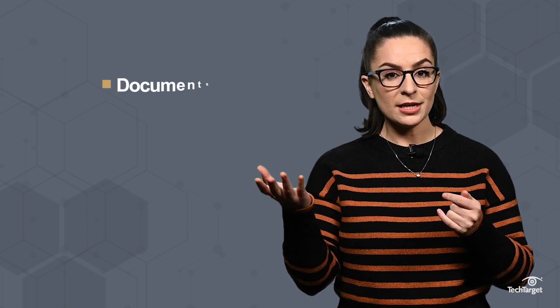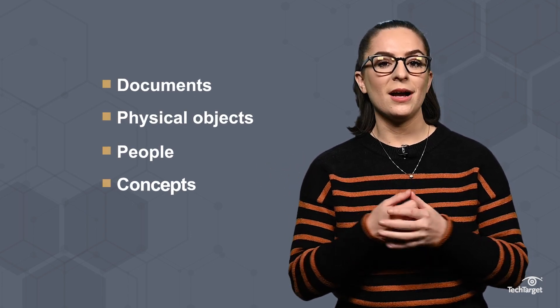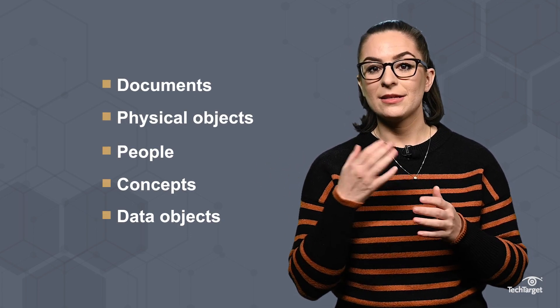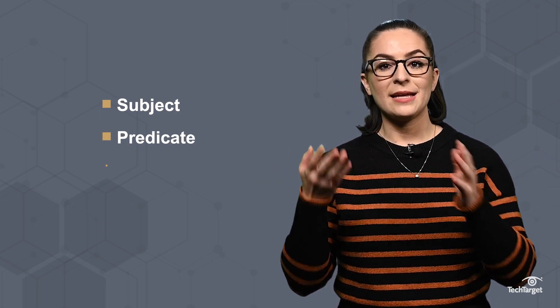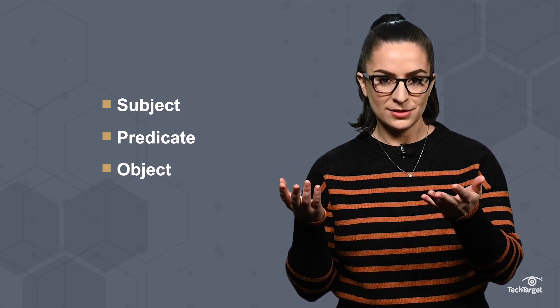RDF is a standard way to make statements about resources like documents, physical objects, people, concepts, or data objects. An RDF statement consists of three components referred to as a triple. The subject, aka the source being described, the predicate, or the relationship, and the object, the thing that's related to the subject.